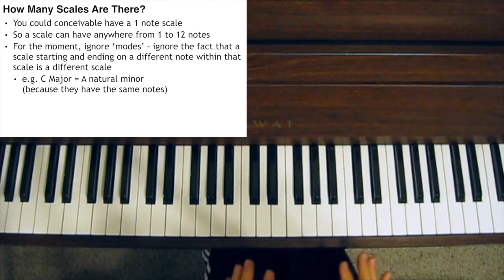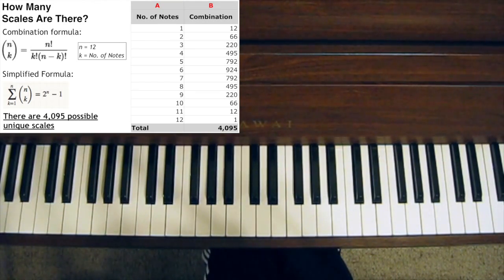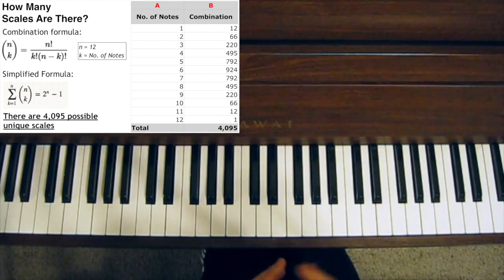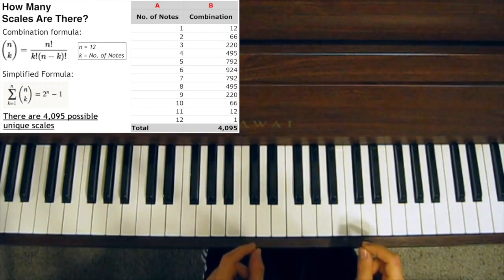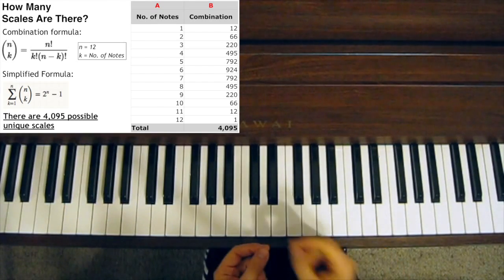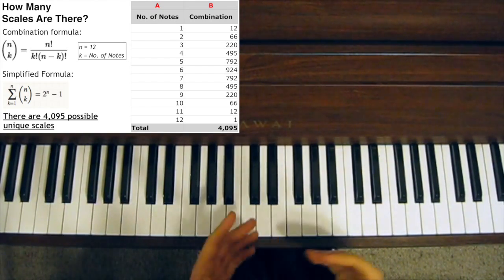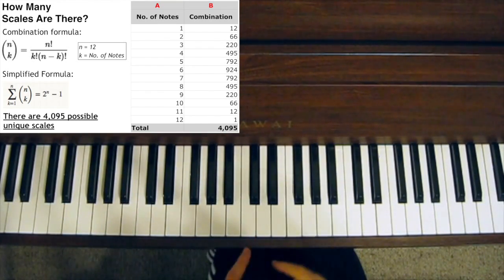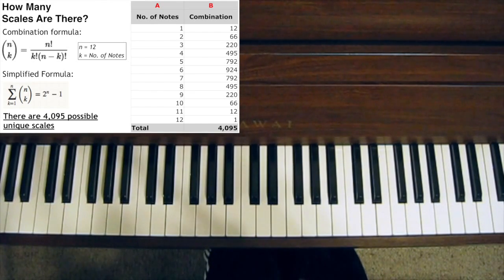So then A natural minor and C major are the same scale — let's just assume that for the moment. So now you can have twelve different one-note scales, each of the twelve notes. And you can have one scale with all twelve notes, ignoring the fact that you can start that same scale on different notes. Then you can have twelve different eleven-note scales, just by omitting one note at a time. And you can have sixty-six different two-note scales.